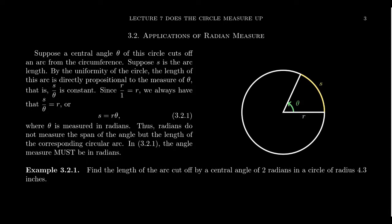If you multiply both sides of the equation by theta, this then gives you the very useful formula s equals r theta, where the length of the arc is going to equal the radius of the circle times the radian measure of the angle.